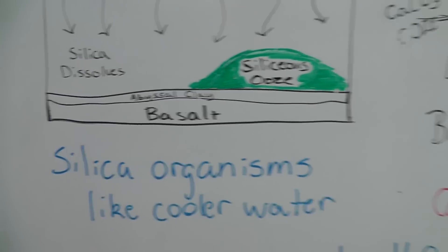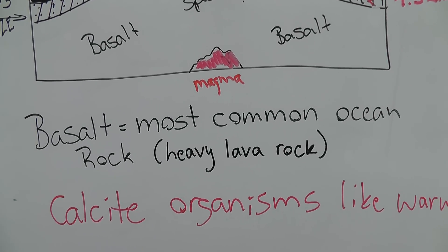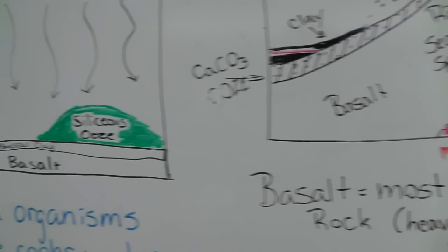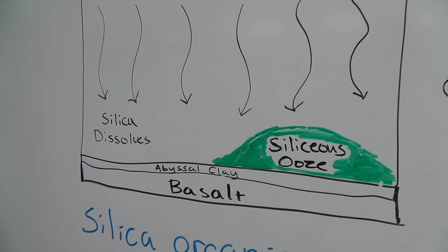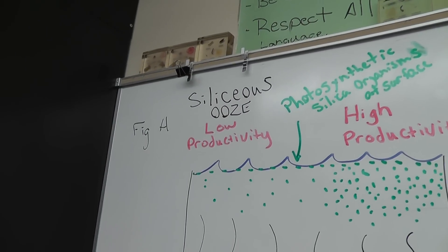As we notice there is a layer of abyssal clay and then we have basalt and basalt is the most common ocean rock which is a heavy lava rock, and if we think about it plates are made from generally lava so a lot of them are going to be made from basalt. So that is our silica ooze.